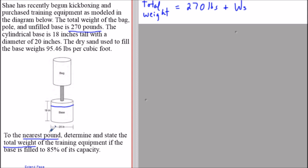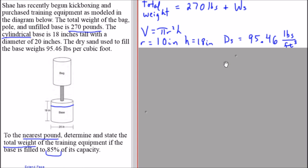The base is going to be filled to 85 percent capacity and this base is in the shape of a cylinder. A few things we need to make note of: the volume of a cylinder is pi times r squared times h.